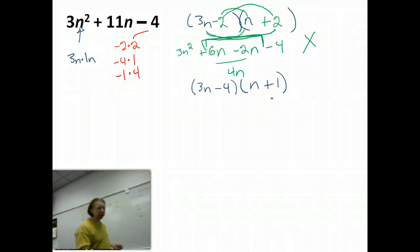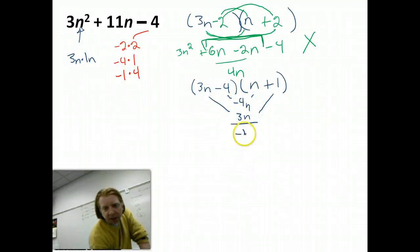So, we pick those guys out. We put them in here. And this time, I'm just going to check the inners and the outers. So, this is negative 4n. And then 3n. Add them up. I get negative 1n. That didn't work. That didn't work.